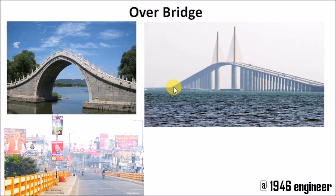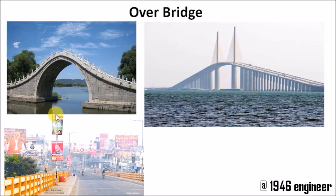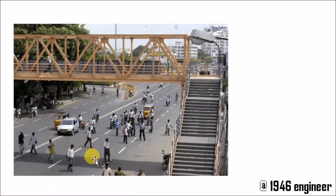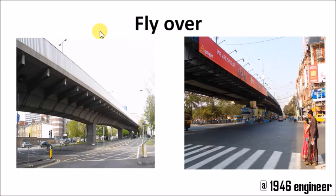Coming to over bridge — with respect to the road reference level, you are climbing up and climbing down. That's why this kind of bridge is called an over bridge. Over bridges can be either over a railroad, a waterway, a river — whatever it may be. If you climb up and climb down, we call it an over bridge. That's why these are called foot over bridges or pedestrian foot over bridges, which we see even in railway stations.